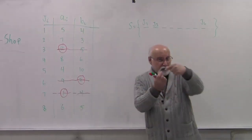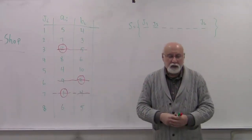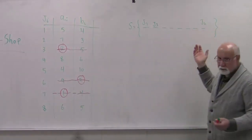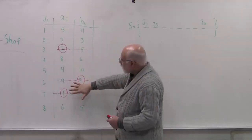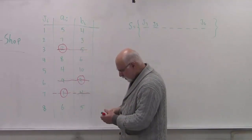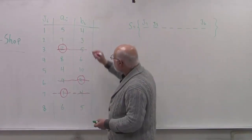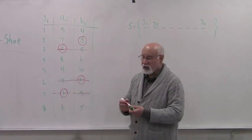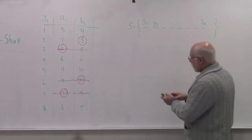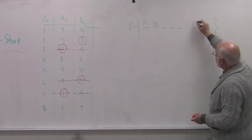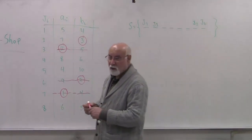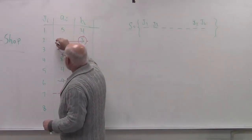Now, if it happens that both of them were on the same machine, then you have a choice — you can either put them early or late; it doesn't make any difference. So the next one: 2 is gone. We have a 3 here and a 3 here. This one is on the second machine, so we will schedule J2 here. You continue this process until all jobs are exhausted.